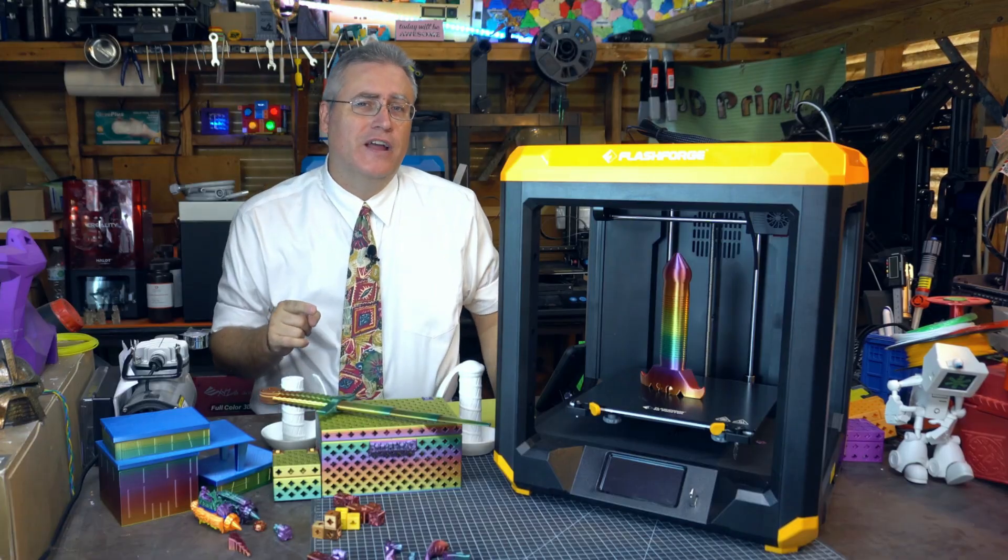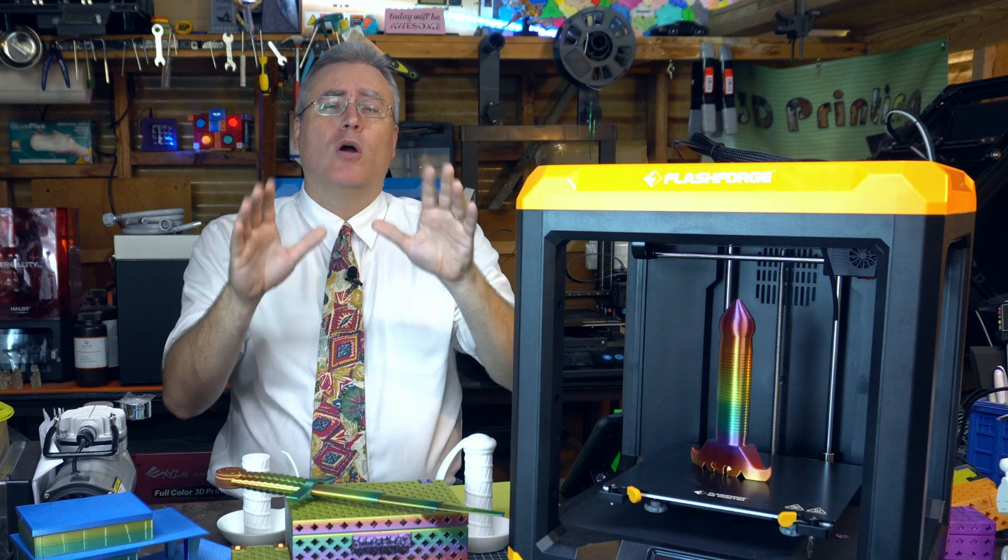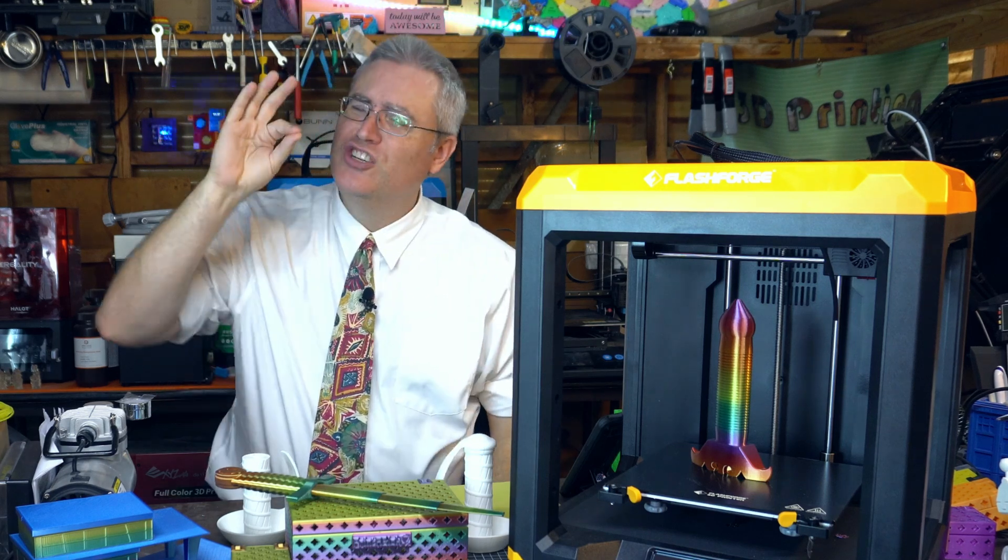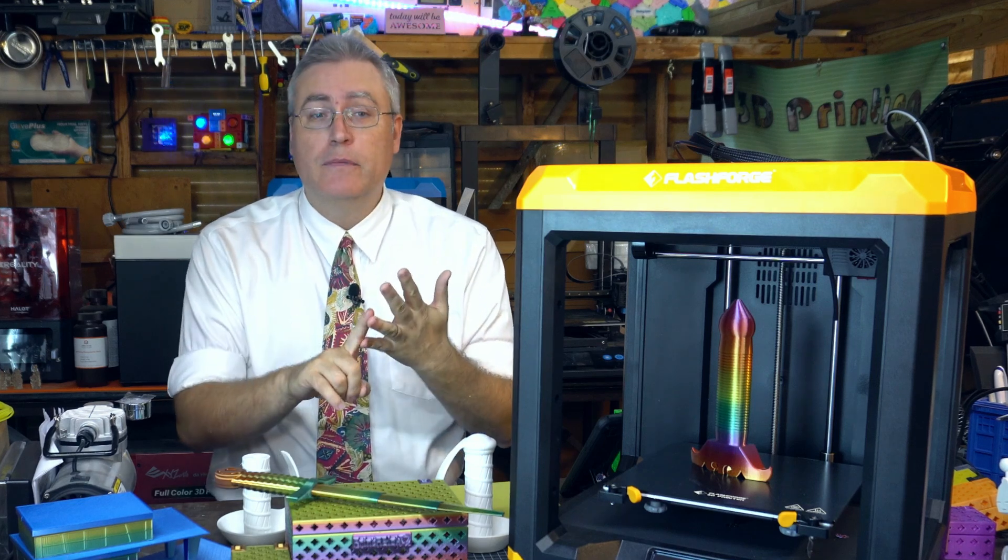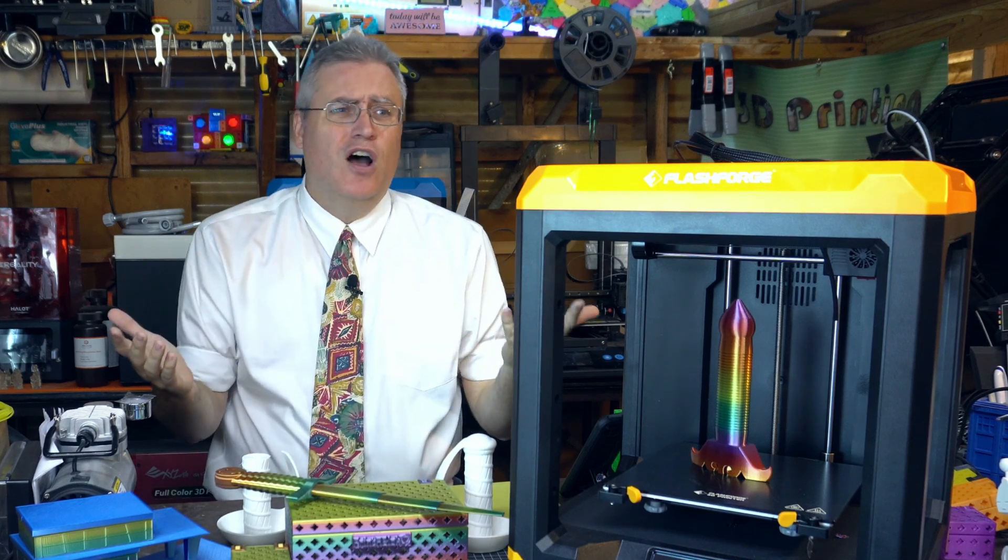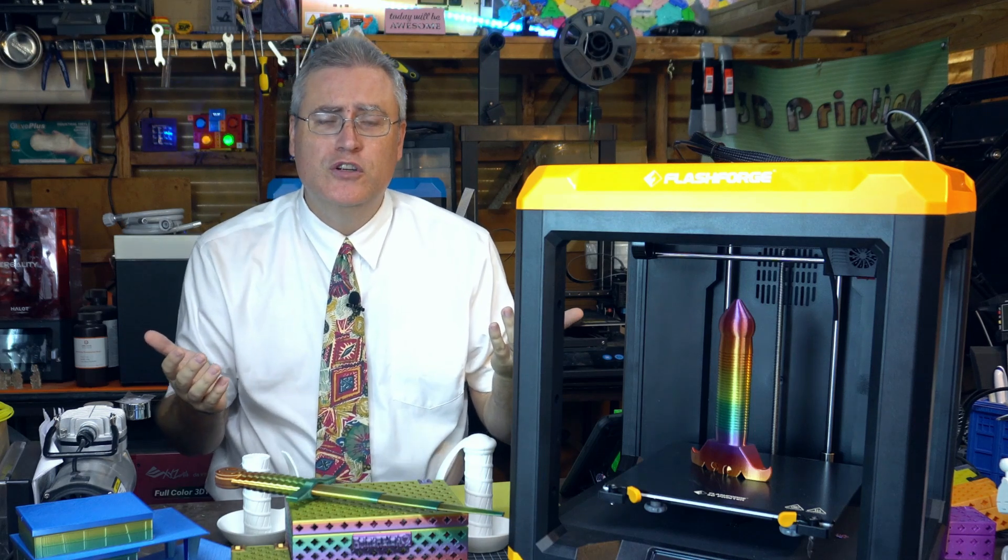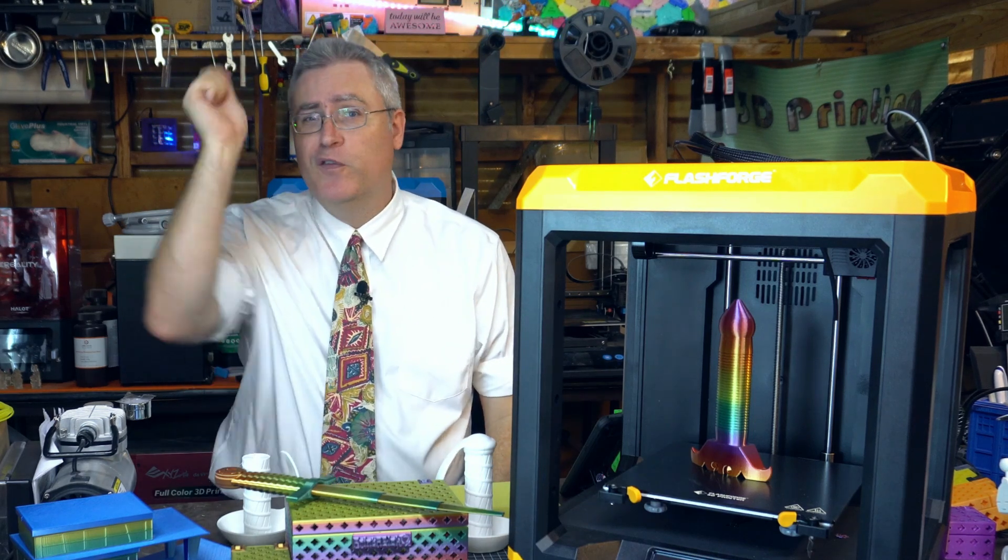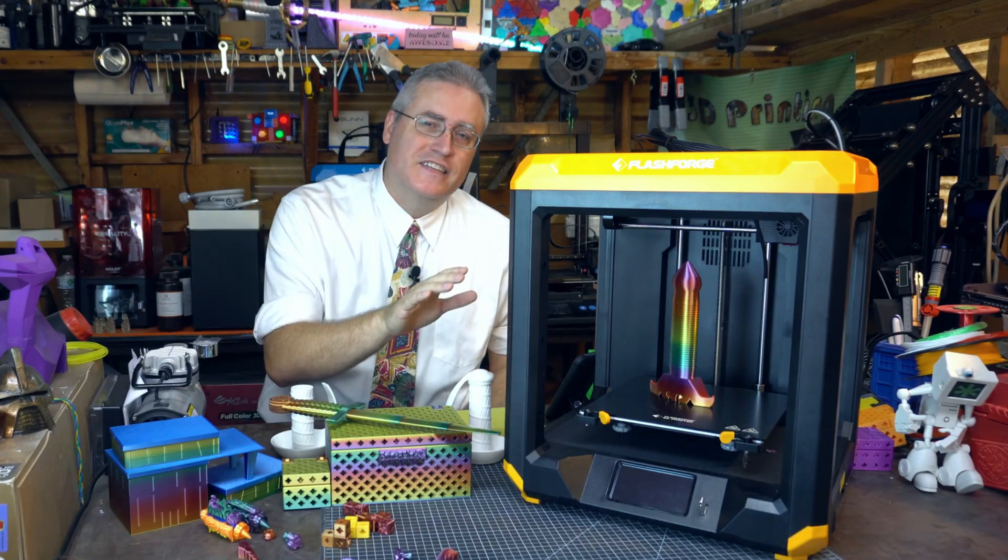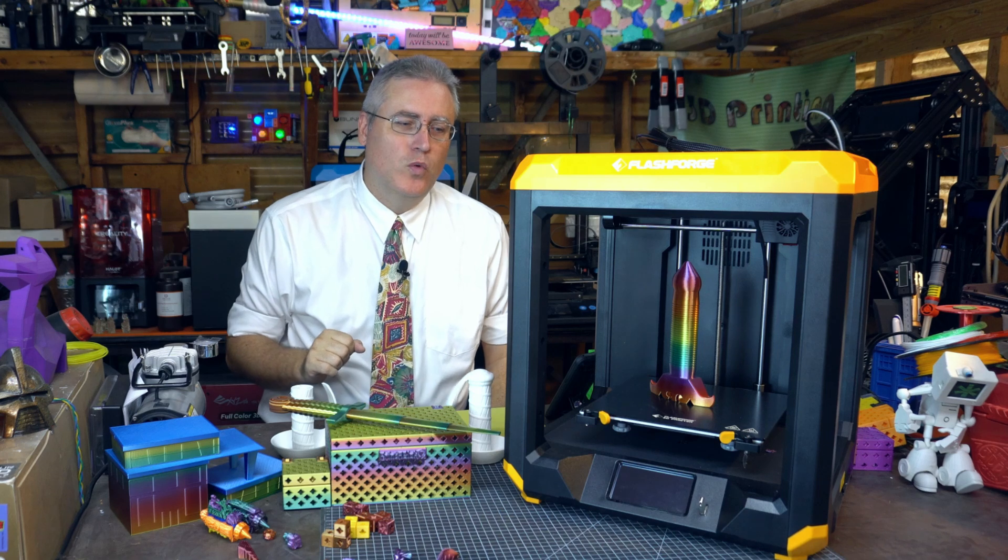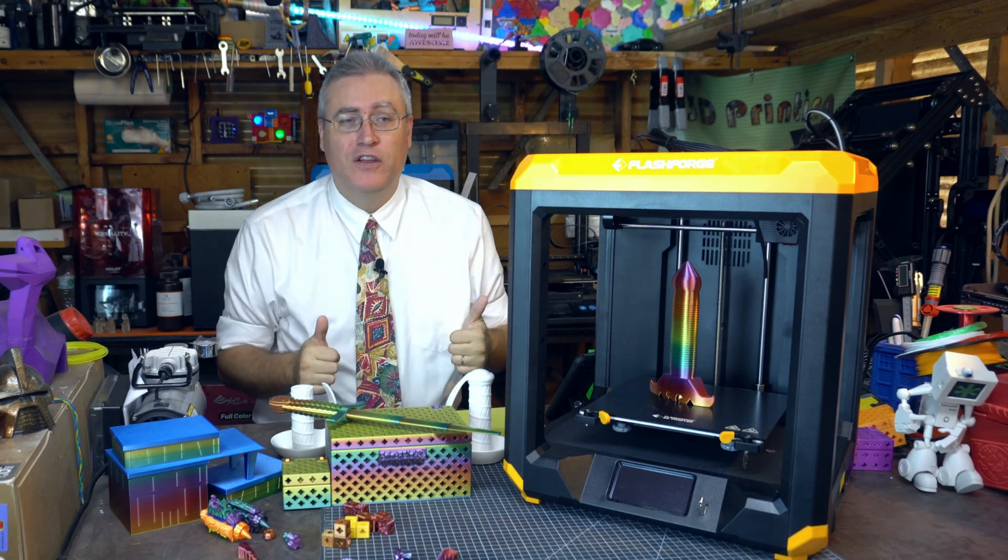Try doing that with your Ender 3 or your Prusa or your Ultimaker or really any 3D printer that you've paid less than a thousand dollars for. It's a remarkable feature that makes these machines just that much more resilient and makes them perfect for schools, libraries, maker spaces or just a home where you might have children who are impatient and don't think to wait before yanking out the card to start their next print. And that feature is present in the Artemis as well.